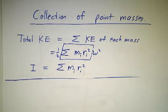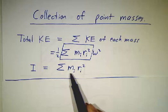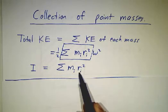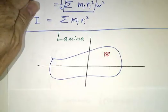To get the moment of inertia of a bunch of masses, you add up mass times distance squared for all of the points. So now we can turn to our lamina.